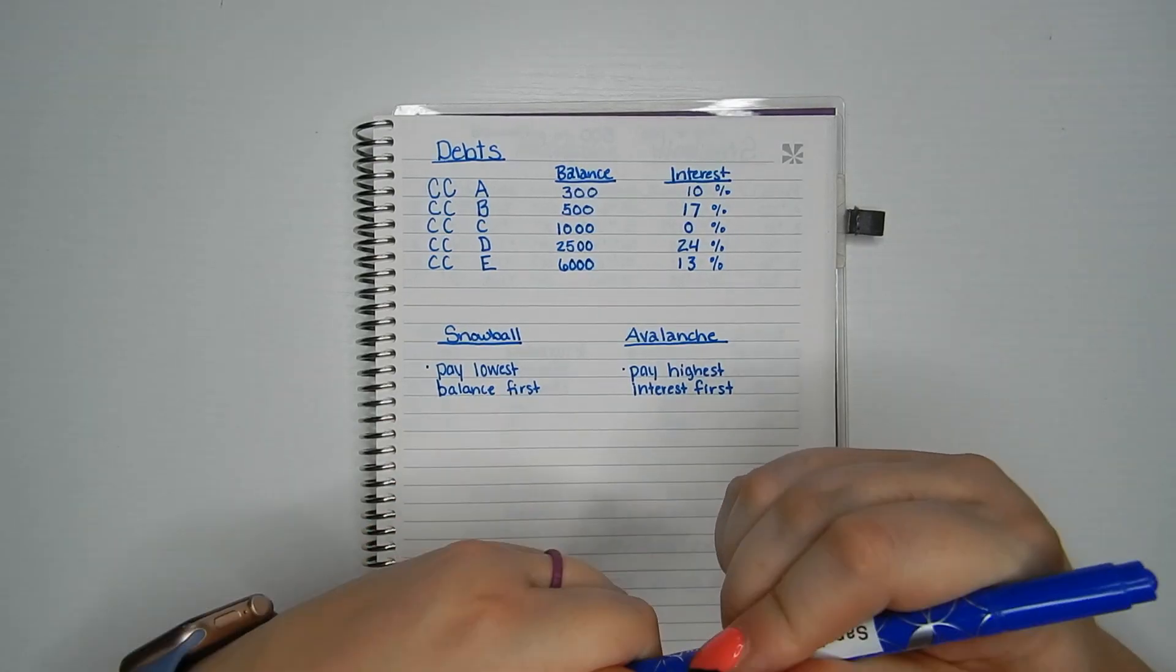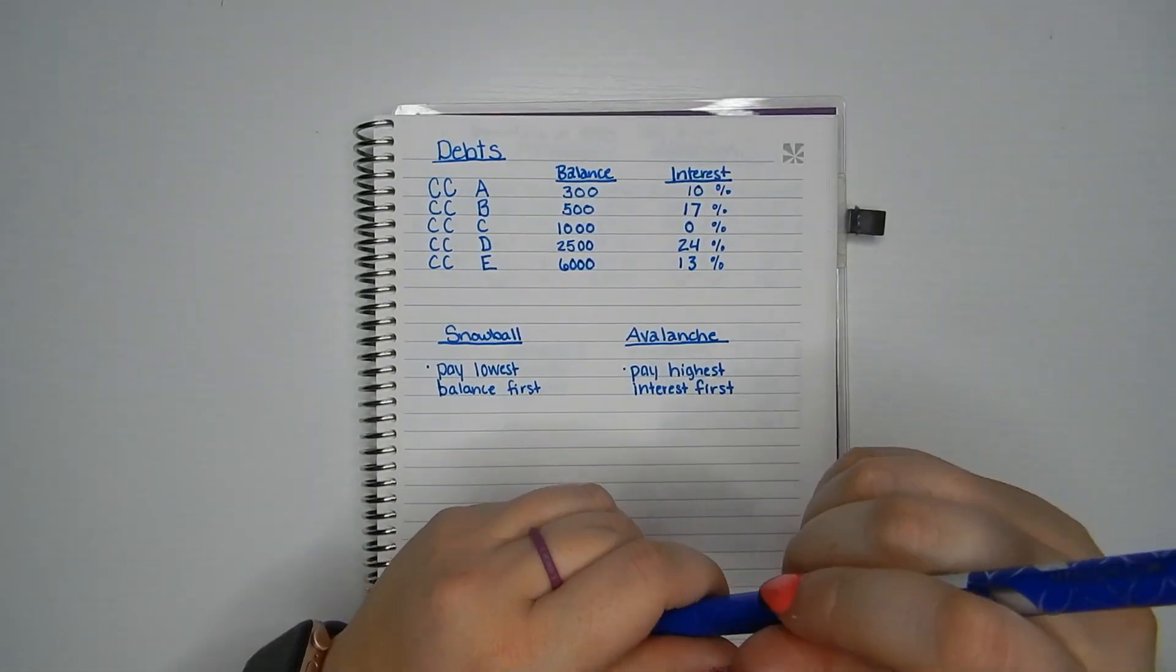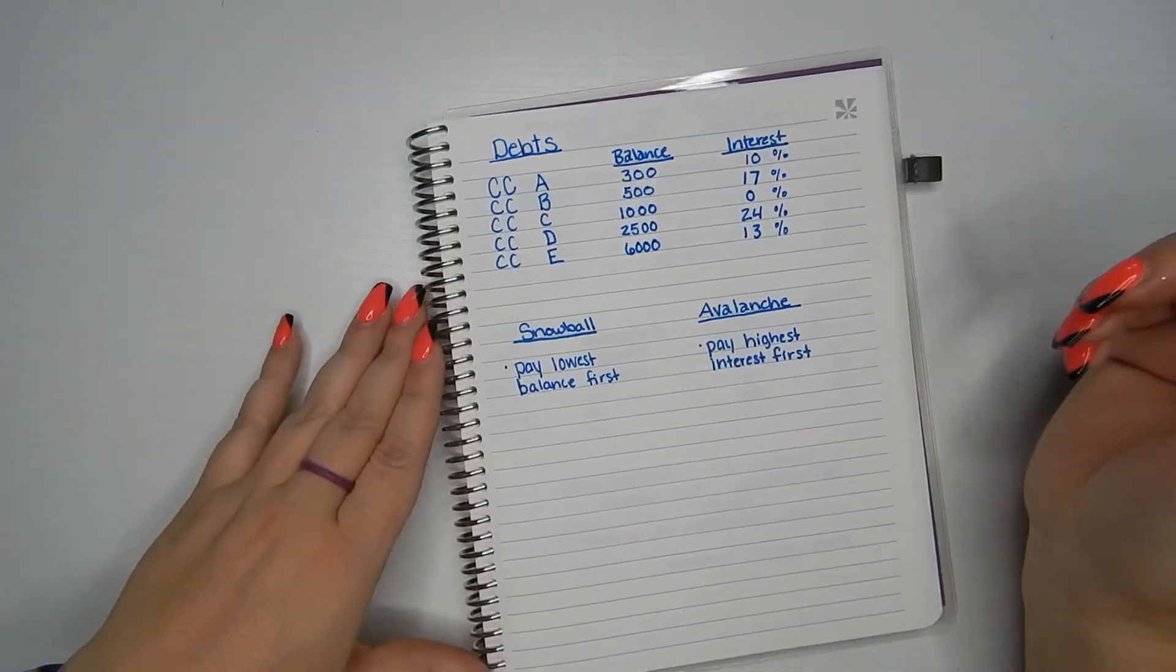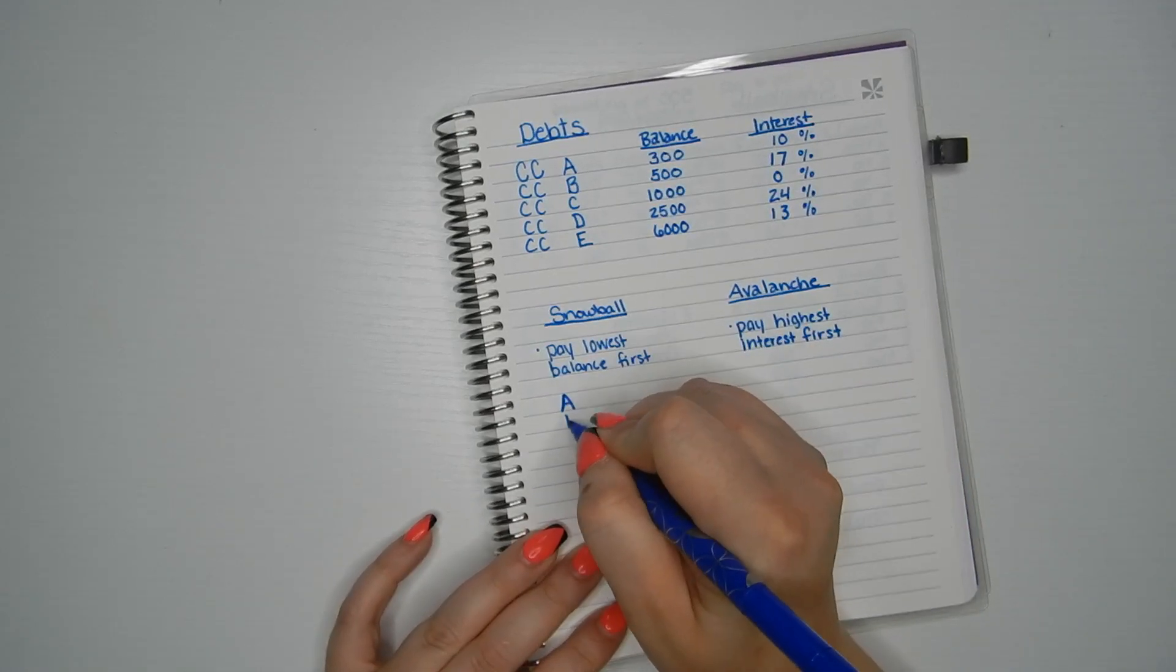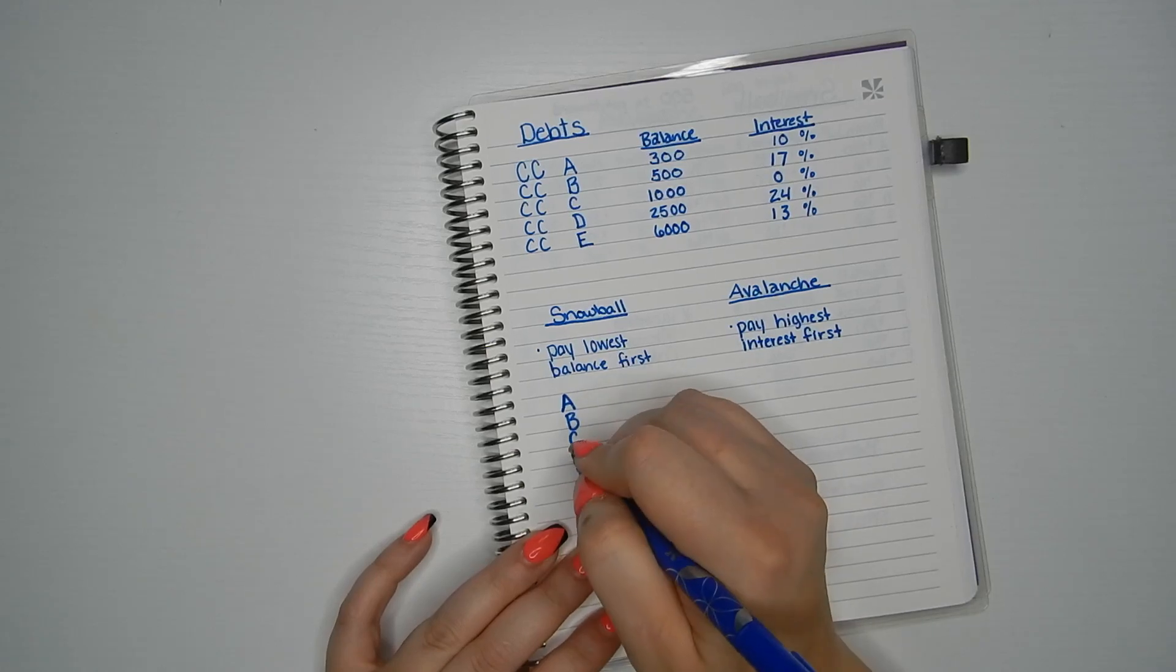So if I was looking at these debts here and I was using the debt snowball method, I would pay my cards off in this order: A, B, C, D, and then E.